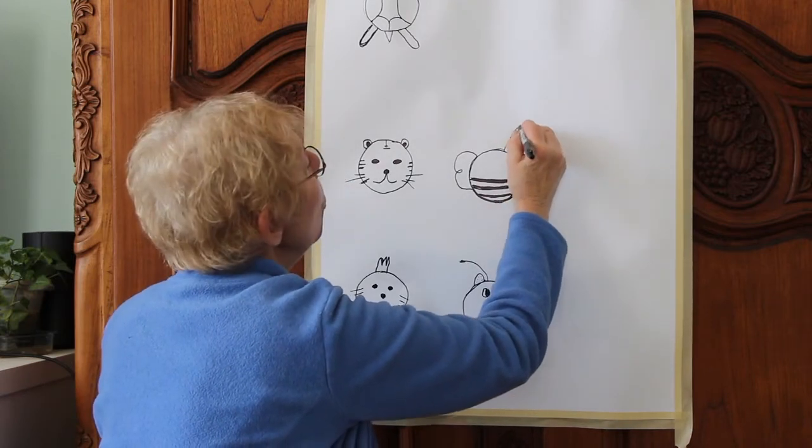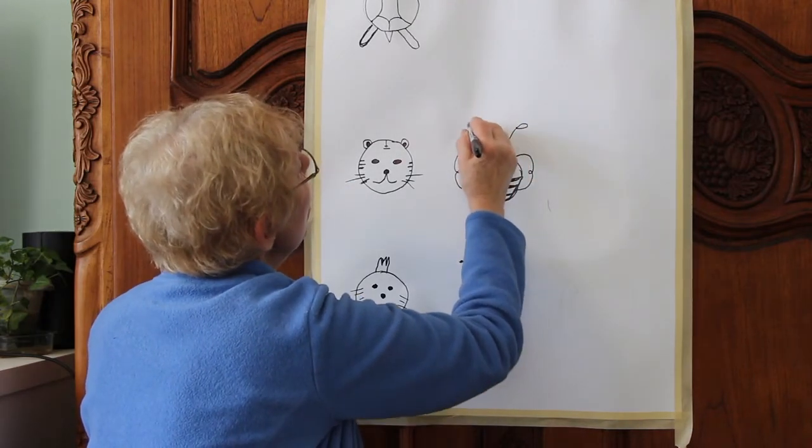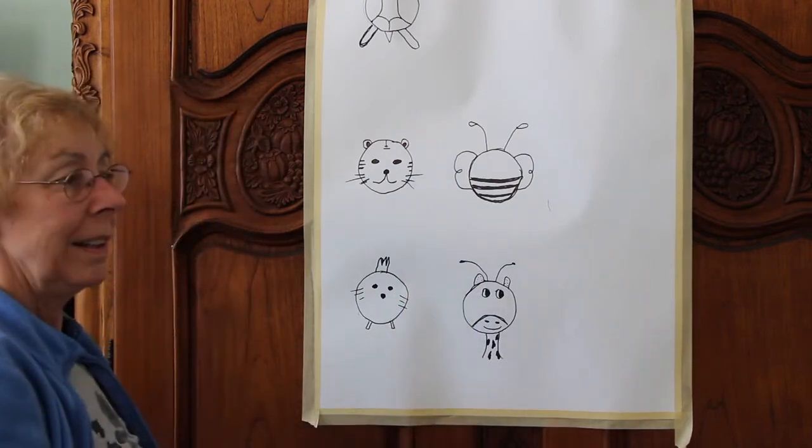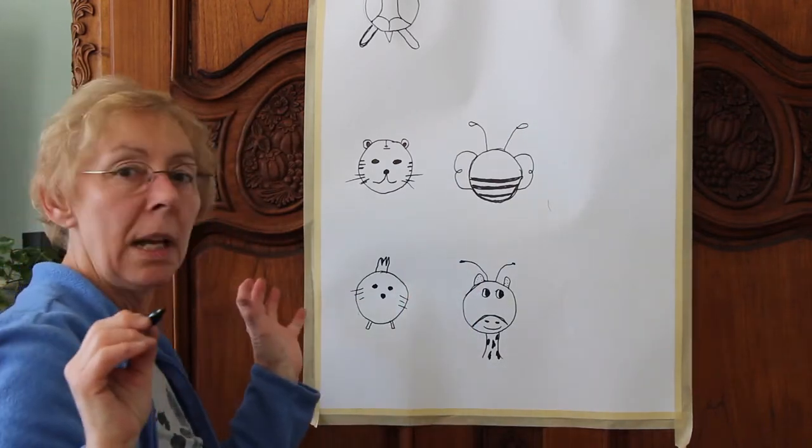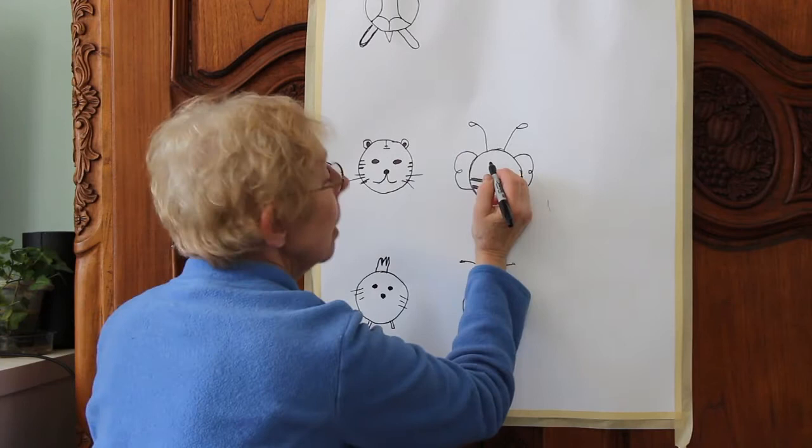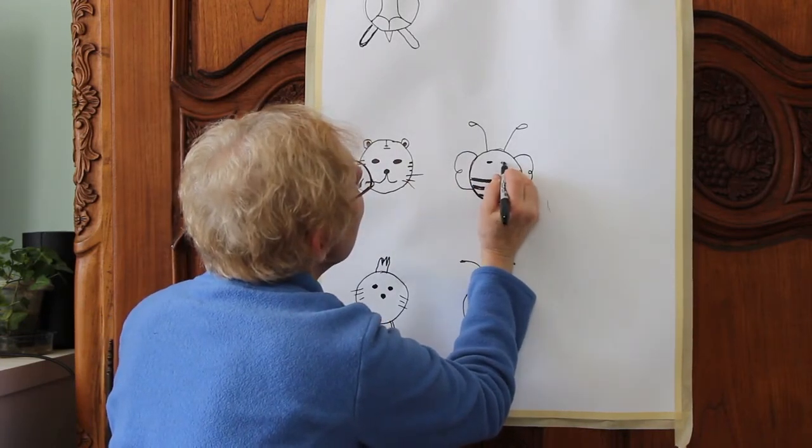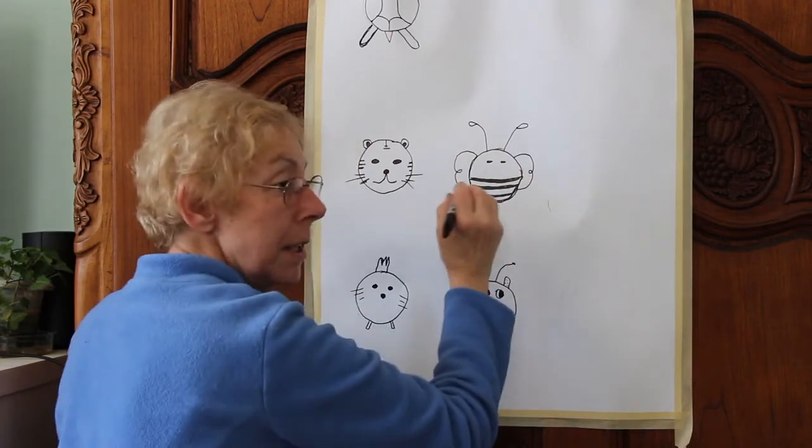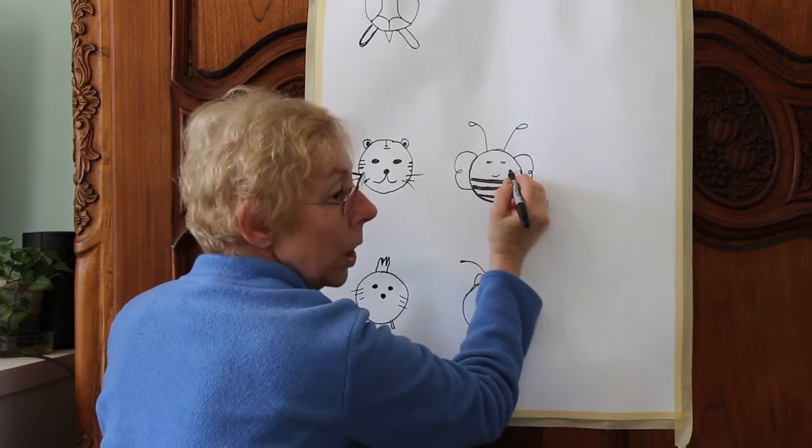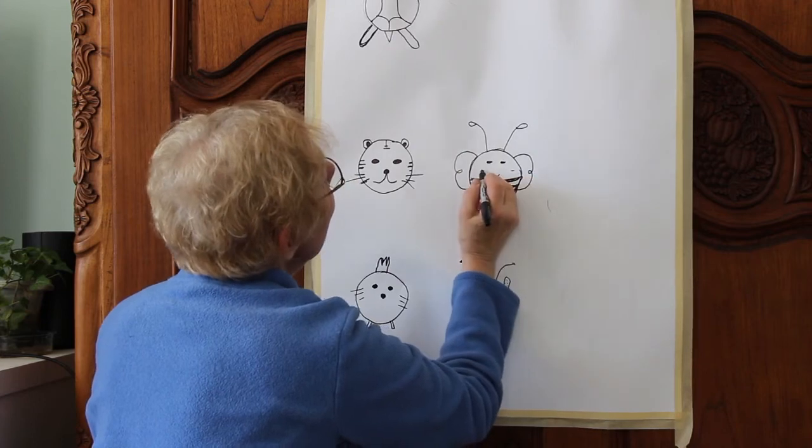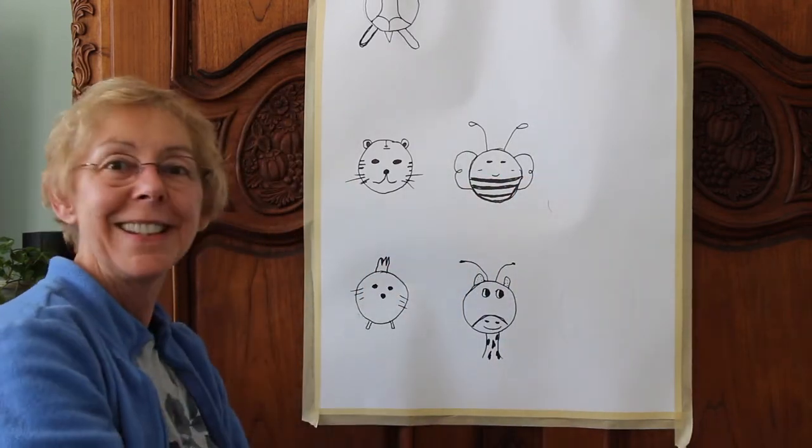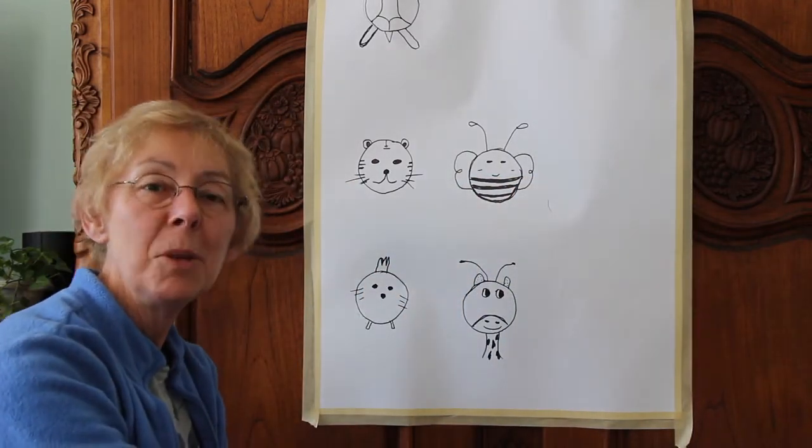What else does a bee need? Antenna. So, whoop. Whoop. Something's wrong. We need something else. And we ought to have a mouth. And we ought to have a line there. And there he is. A bee.